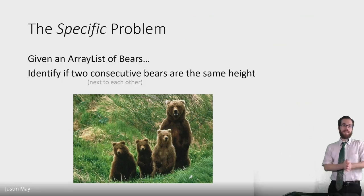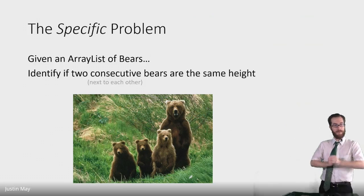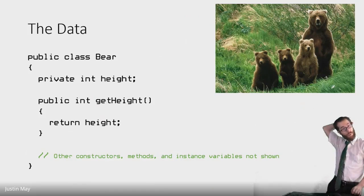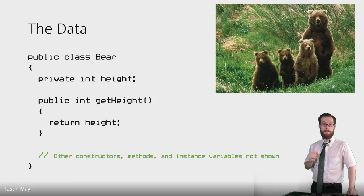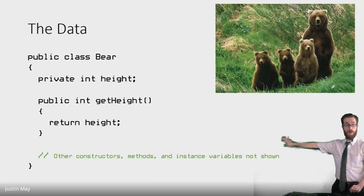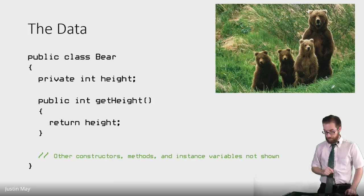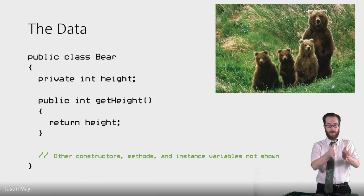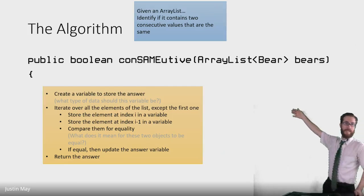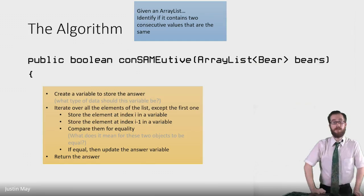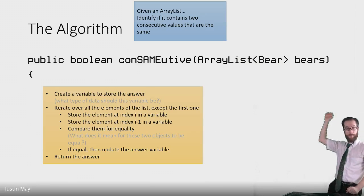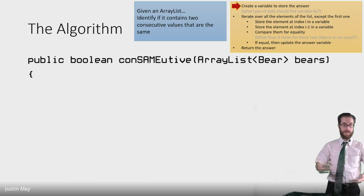Let's say we have an ArrayList of bear objects. We're going to identify if two consecutive bears have the same height. Our bear class has an instance variable keeping track of their height, and a getHeight method which will tell us the value of the height. There's probably a bunch of other stuff bears can do, but for our particular problem we only care that we can get the height of the bear — and what we care about is whether there are two bears next to each other that have the same height.